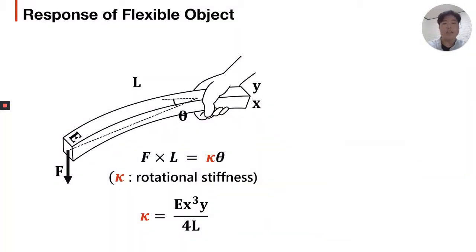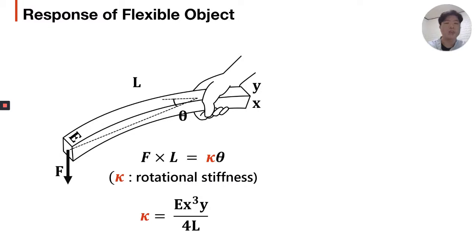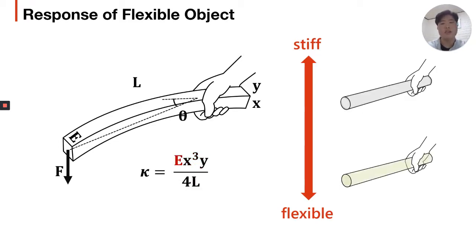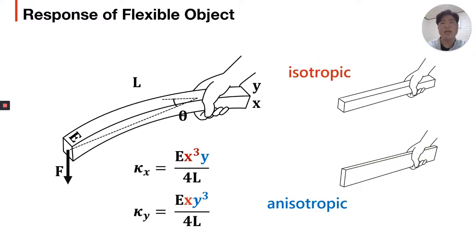For the theoretical model we followed, the deflection angle of a flexible beam is inversely proportional to the rotational stiffness of the object, kappa. In the case of a uniform and rectangular beam, kappa is derived through the following formula. This means the object becomes stiffer as it becomes thicker, shorter, or is composed of stiffer material. And sometimes, according to the direction of bending, the object shows different stiffness — a behavior called anisotropic behavior.